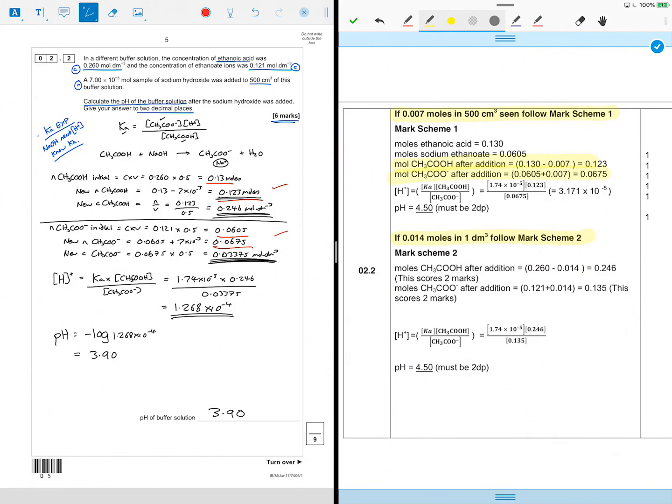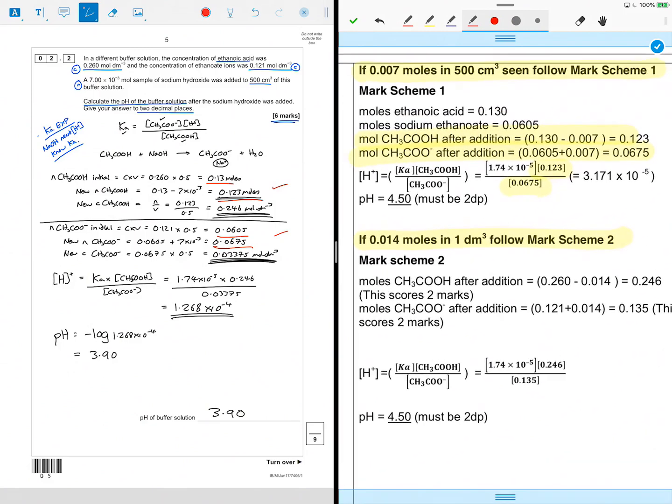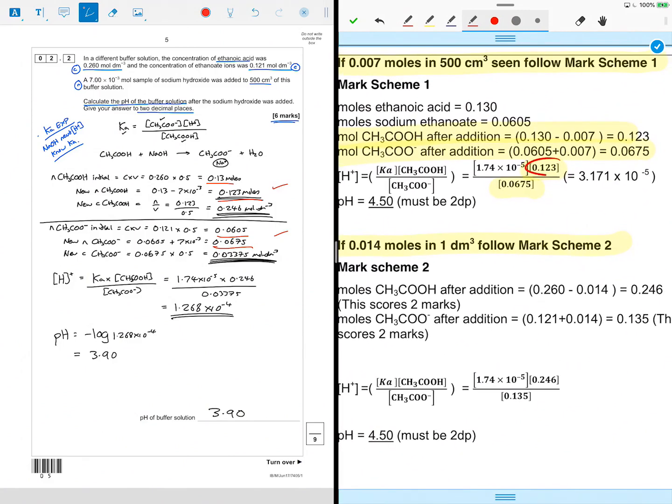They are using these values, the number of moles here in 500 centimeter cubed. Now for me, we should be using concentrations, not number of moles, because that's what square brackets is. It's the concentration of those things. They haven't worked out the concentration here.